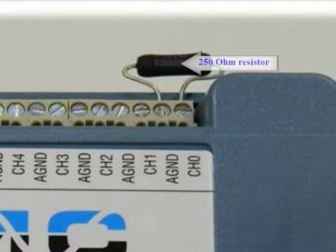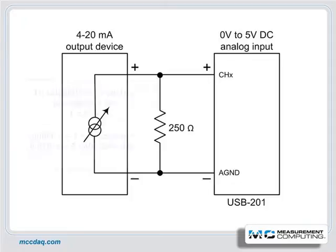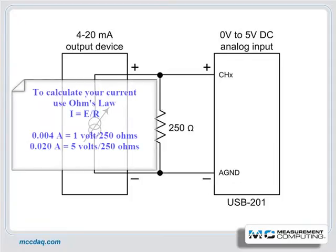Now to set up our experiment. We will use a 250 ohm resistor as a current shunt, which will give us a 1 to 5 volt drop across the resistor. We want to calculate the current based on the known resistor value and the measured voltage. To do this we will use Ohm's law, which states that current is equal to voltage divided by resistance. We know our resistor value and our measured voltage value, so we can easily calculate the current.